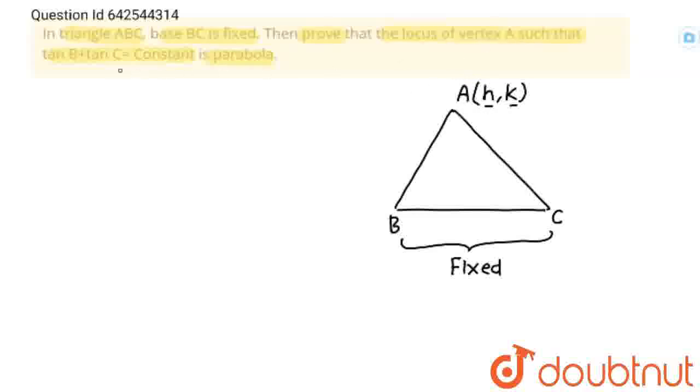So condition for vertex A is that when A is joined to B and C, so the angle, this angle is B and this angle is C. So tan B plus tan C is always constant, not going to change. Now see, in this question, there is no equation is given, but we have to prove this question using mathematics.